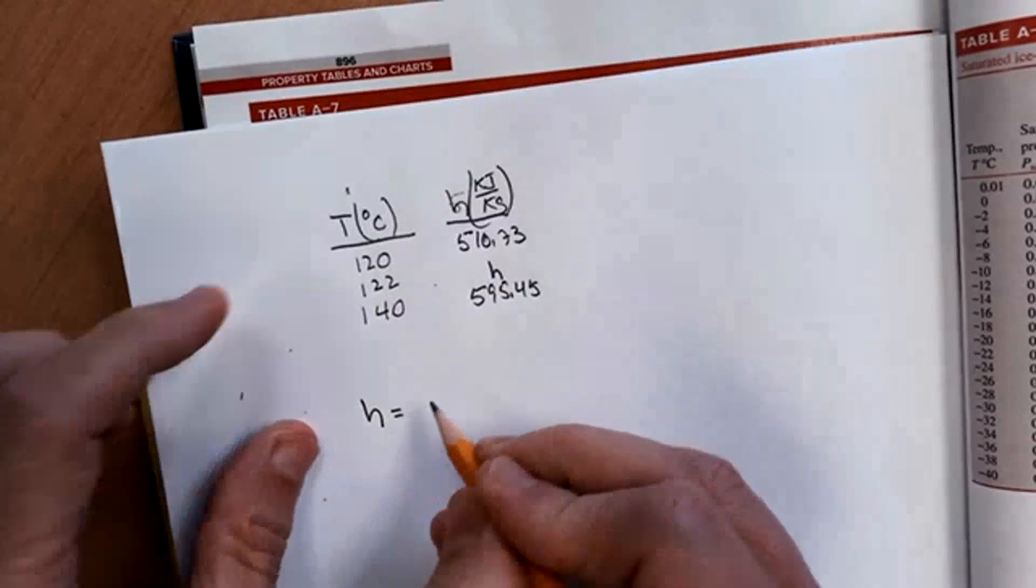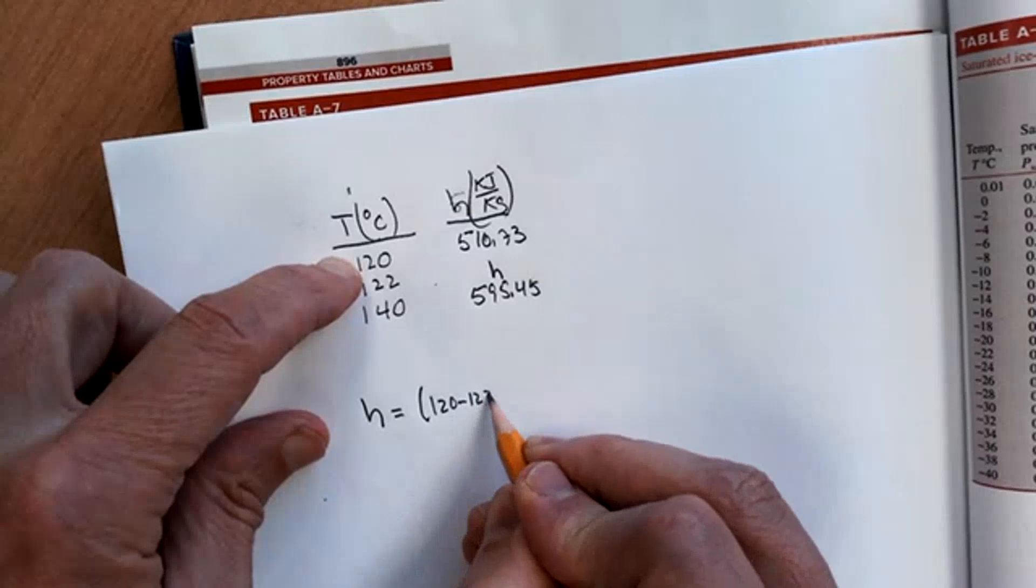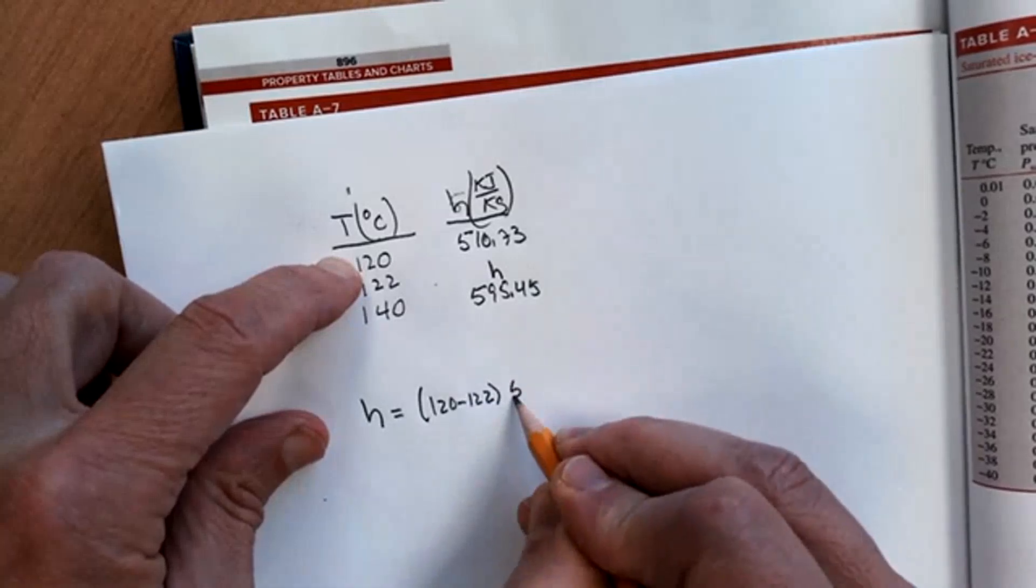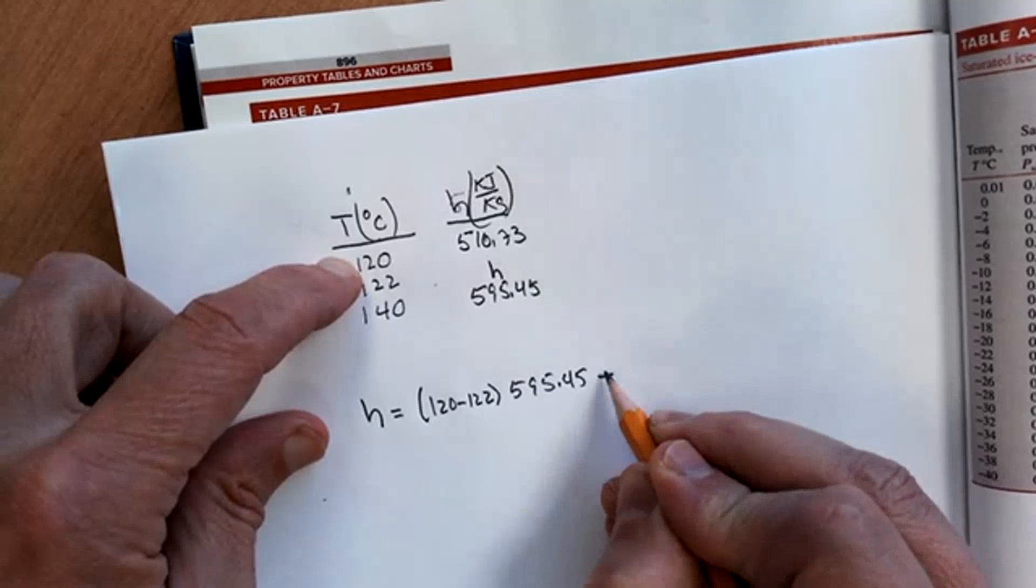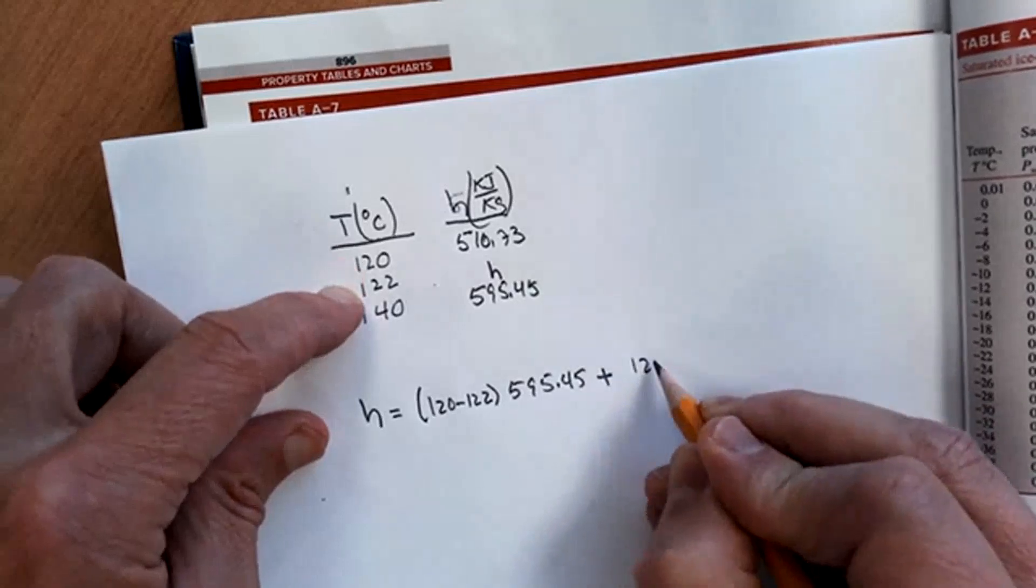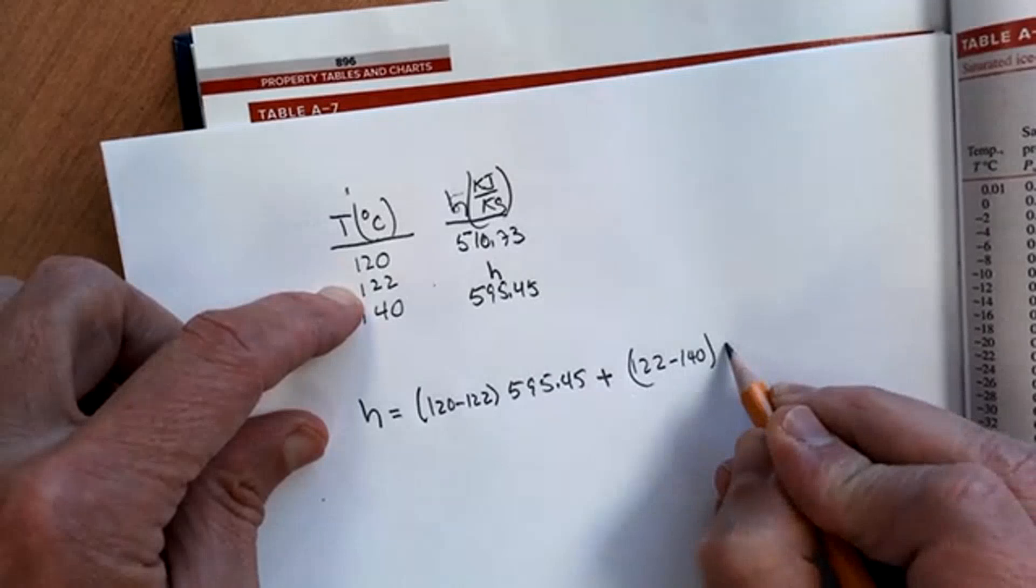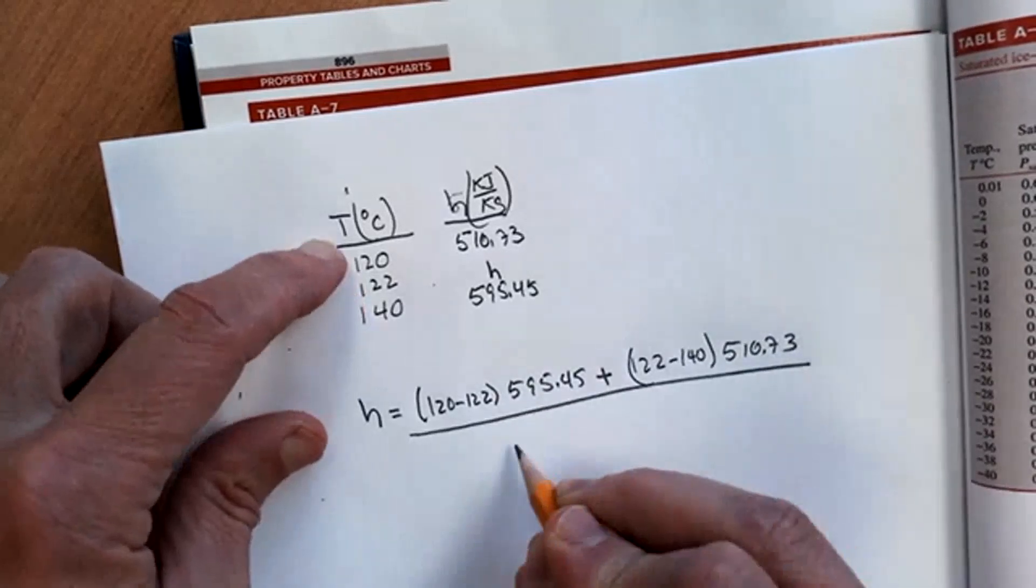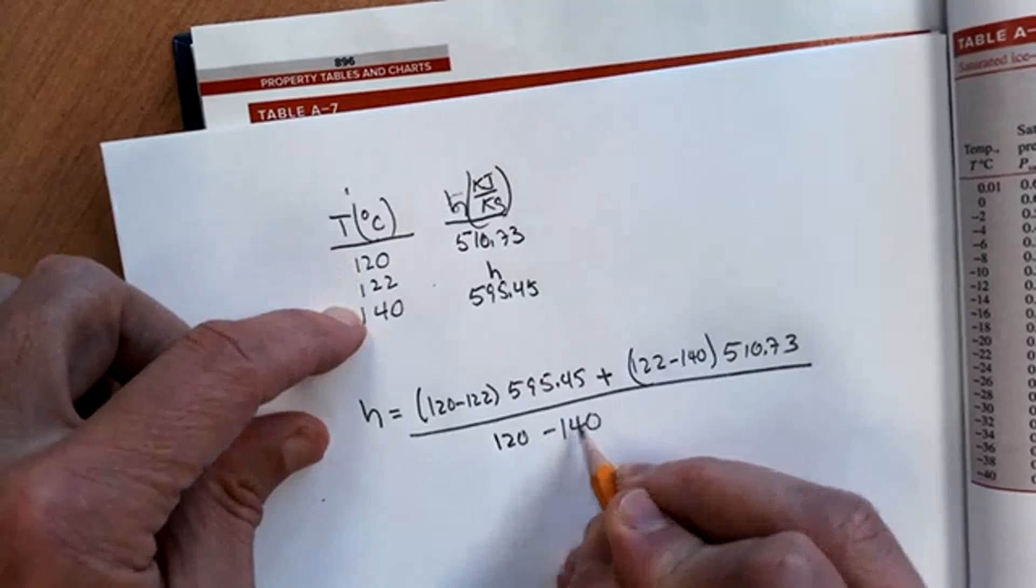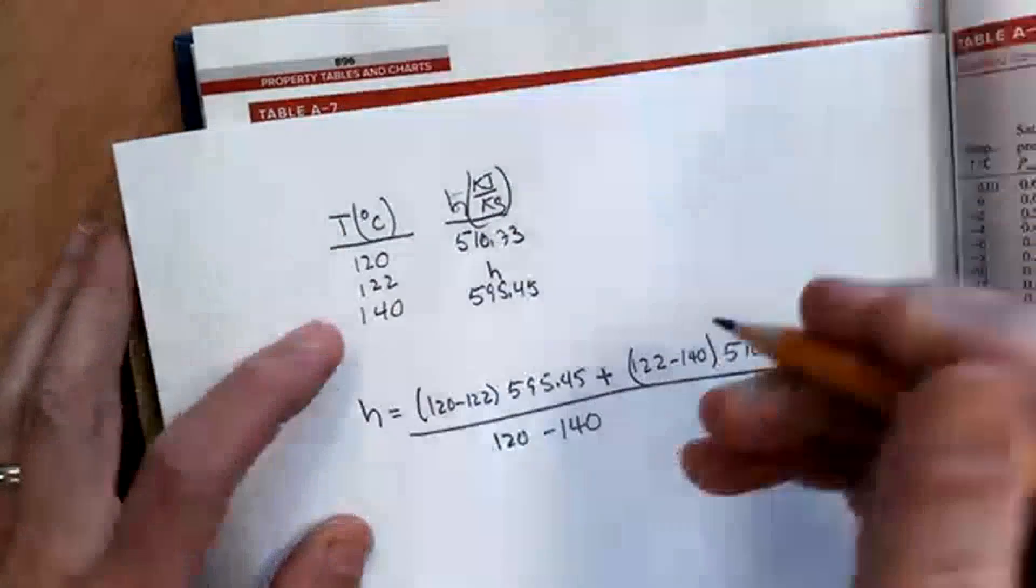So the H value is going to be equal to 120 minus 122 times 595.45 plus 122 minus 140 times 510.73, all divided by the difference 120 minus 140. You can see these are going to be negative, negative. Don't worry about that. It's all going to work out in the end.